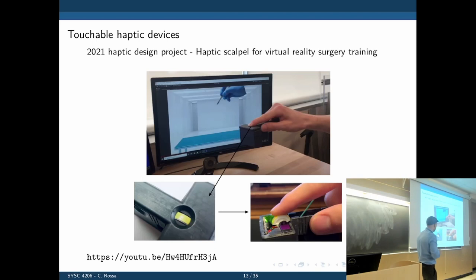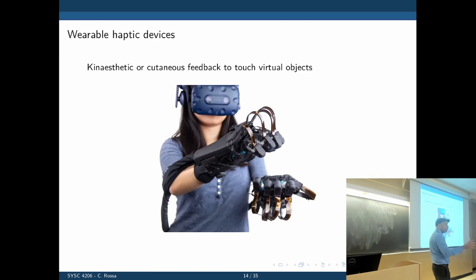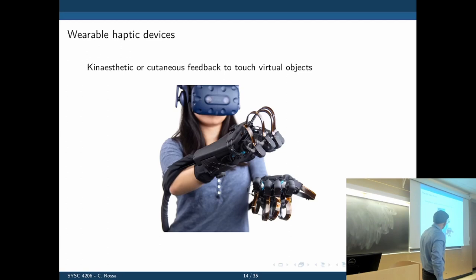The next category is the wearable device. The idea is to use giant gloves with actuators on your fingers — when you reach an object, it will stop you from moving, preventing you from moving further, giving you the sensation of touching something in that environment. Look how many cables go in there — it's not very natural. You are solving a problem but probably creating a new one: now you have to wear all this equipment.